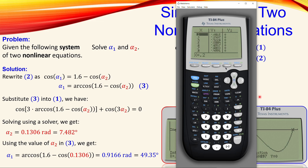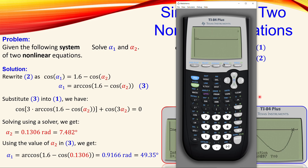Set the window with x from 0 to 1, and y from about −0.8 to 0.5. Then plot the graph. You can see the curve of the left-hand side of the equation — the complicated expression — crossing the x-axis, which represents y = 0. The graph stops where the function is no longer defined. We can now click Trace and see a blinking dot on the graph near the two intersections.